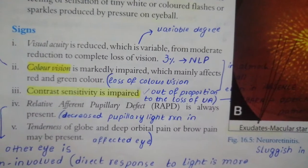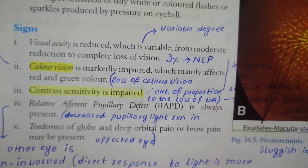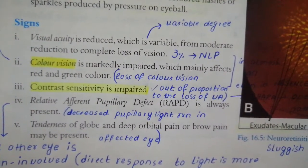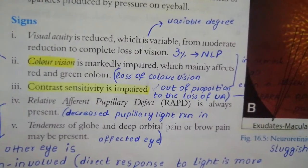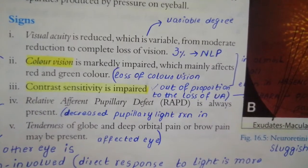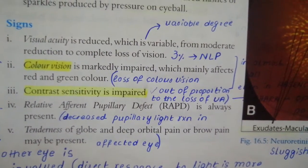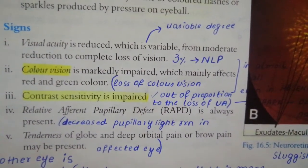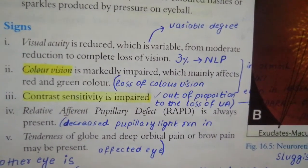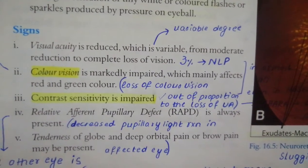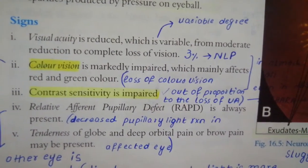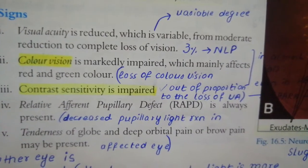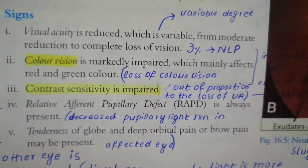Clinical examination begins with visual acuity, which will be reduced variably in the affected eye. Color vision tested with the Ishihara chart will be markedly impaired. A disproportionate loss in color vision compared to visual acuity is a very characteristic finding in optic nerve pathology. Contrast sensitivity is also impaired.